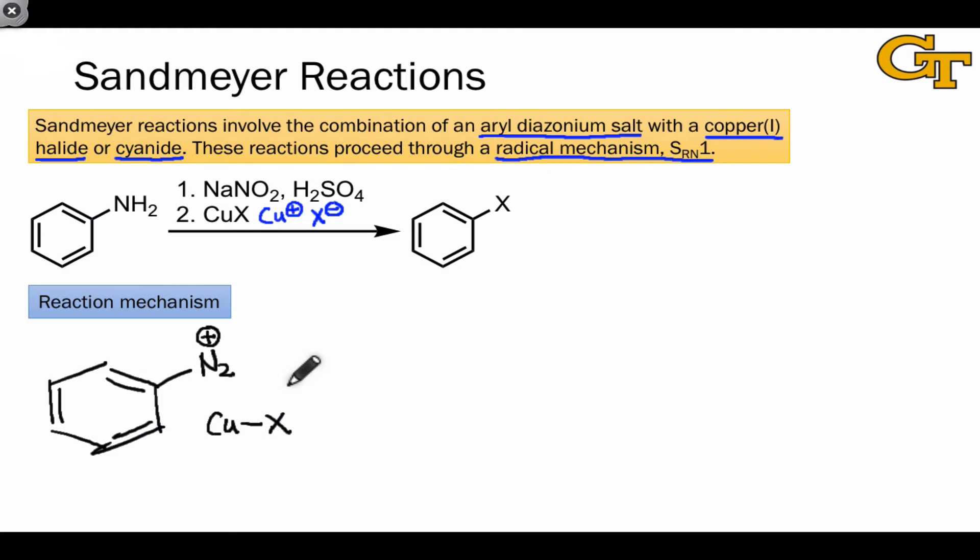In the first step of this process, the copper(I) halide transfers a single electron to the diazonium salt. And you can think of this as a pretty straightforward redox process. There's actually an electron transfer that's going on. Steps of this type are referred to as single electron transfer, or SET steps.